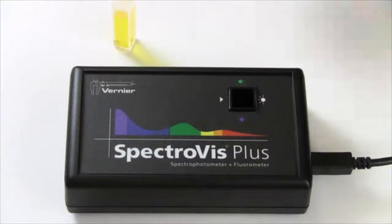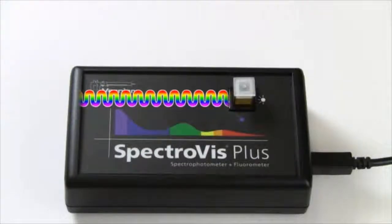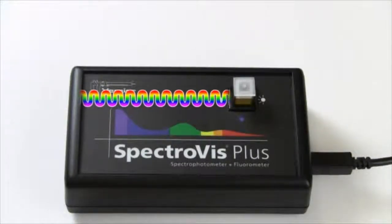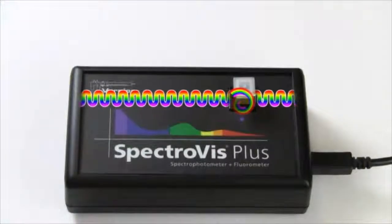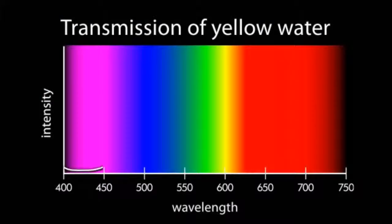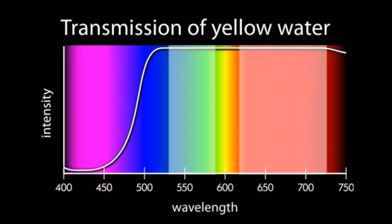You also investigated how light is transmitted through colored water. The spectrophotometer shines white light through the cuvette and measures the absorbance and transmission of the light when it passes through the liquid. You probably expected the yellow wavelengths to be transmitted, but with your knowledge of the RGB model, you should also understand why green and red wavelengths are also transmitted.